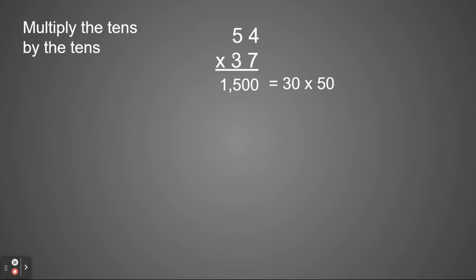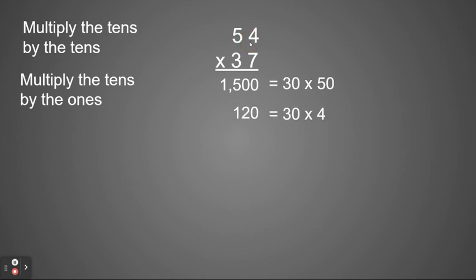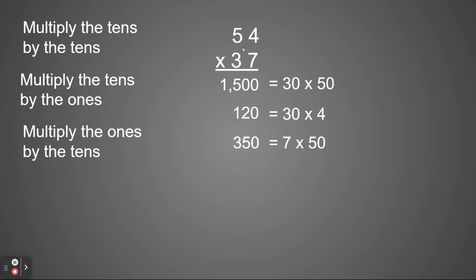Then I'm using my tens place and multiply it times my ones place. So 30 times 4 is 120. Now I'm going to multiply my ones place on the bottom starting up top with my tens place. So multiply my ones times my tens. 7 times 50. 7 times 5 is 35. So 7 times 50 is 350.